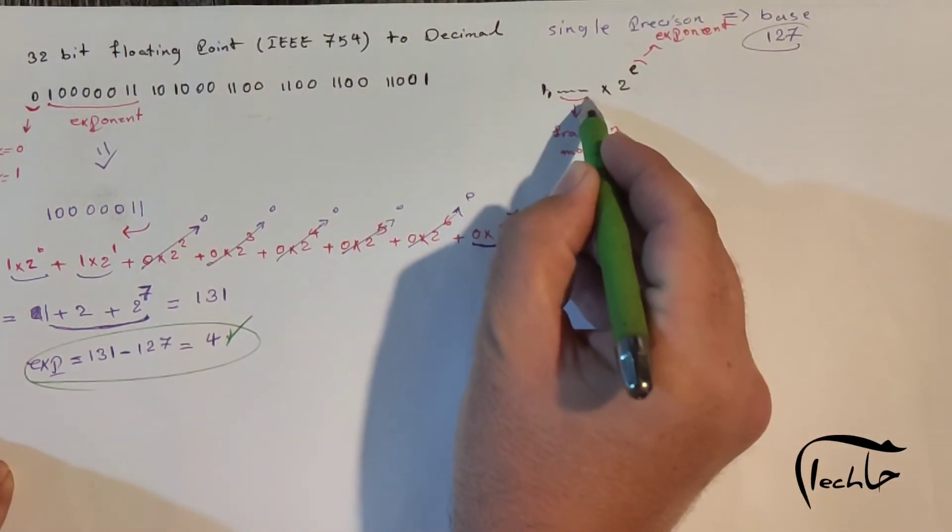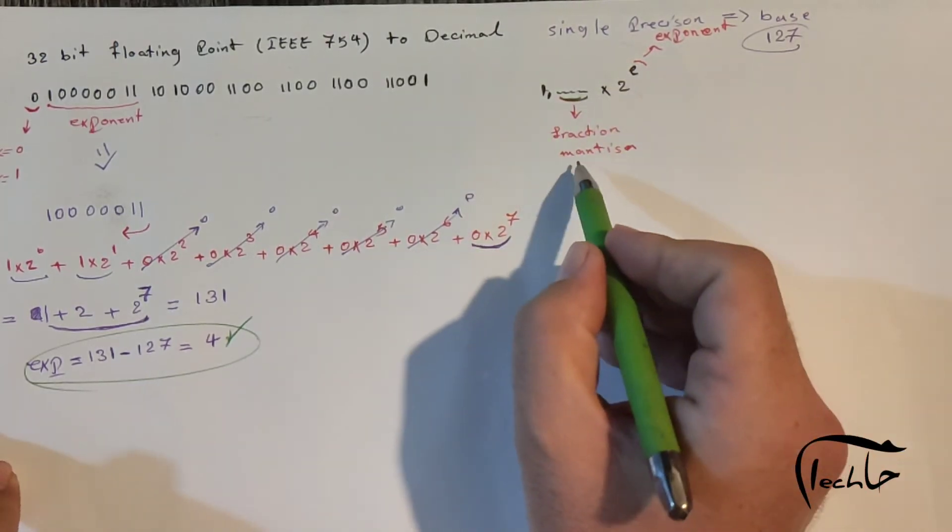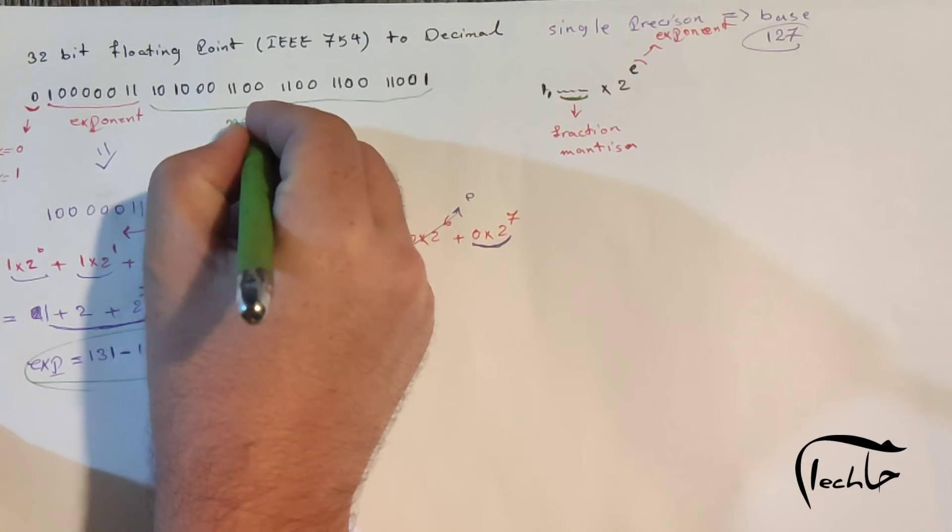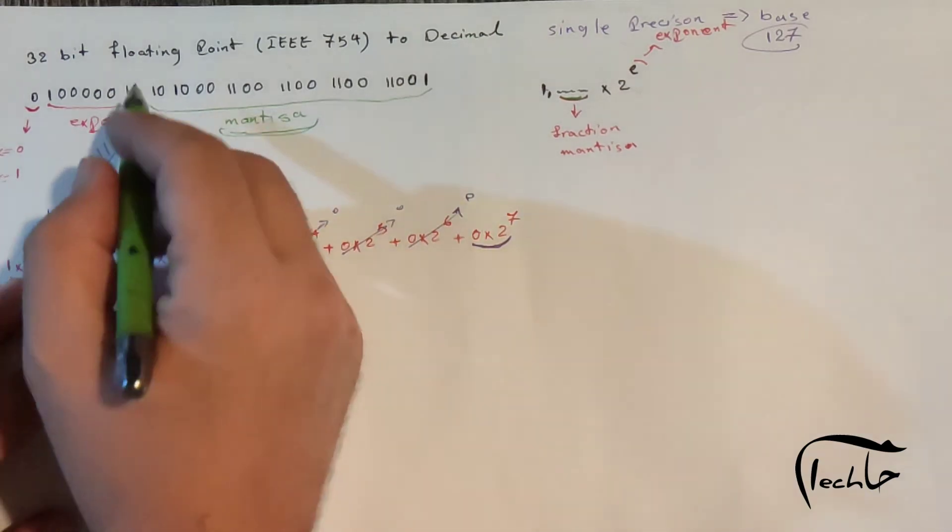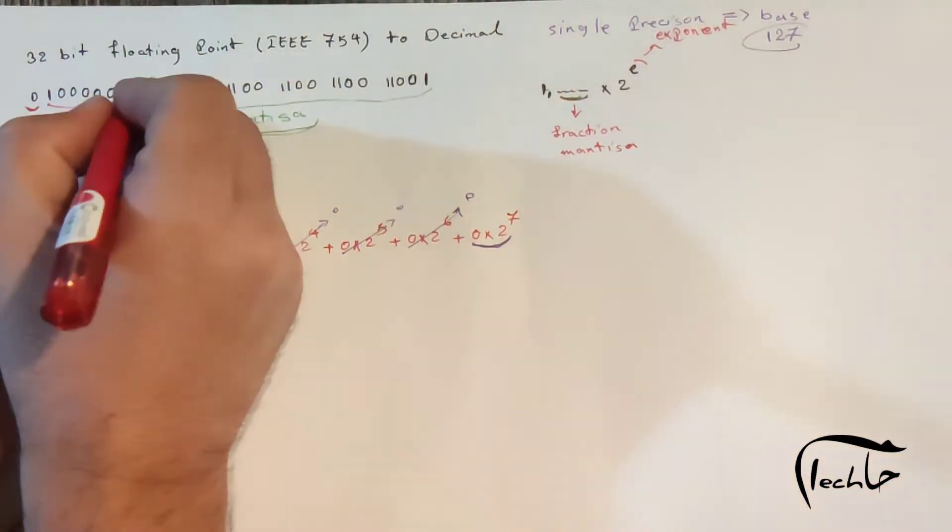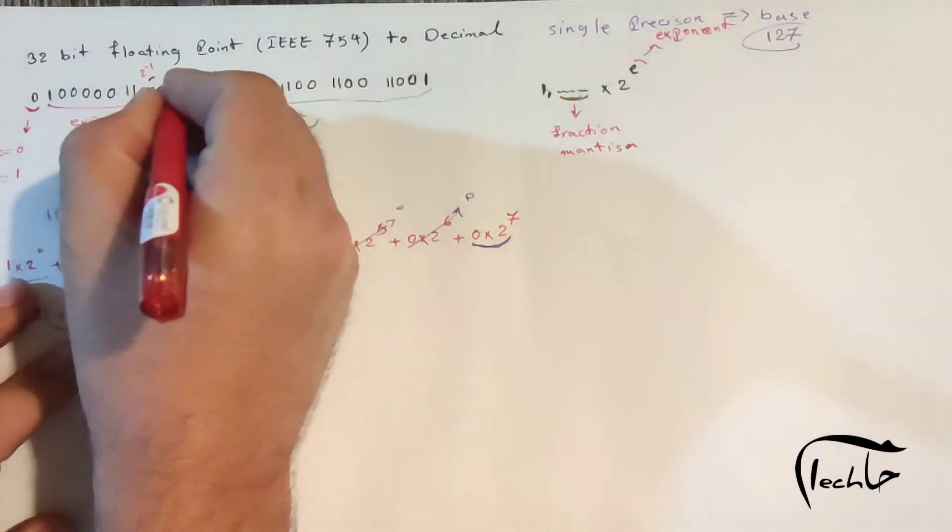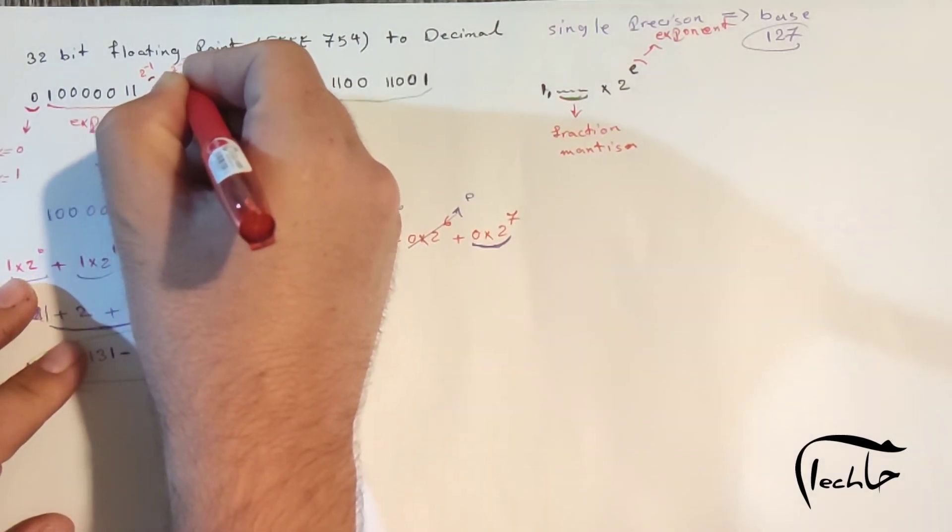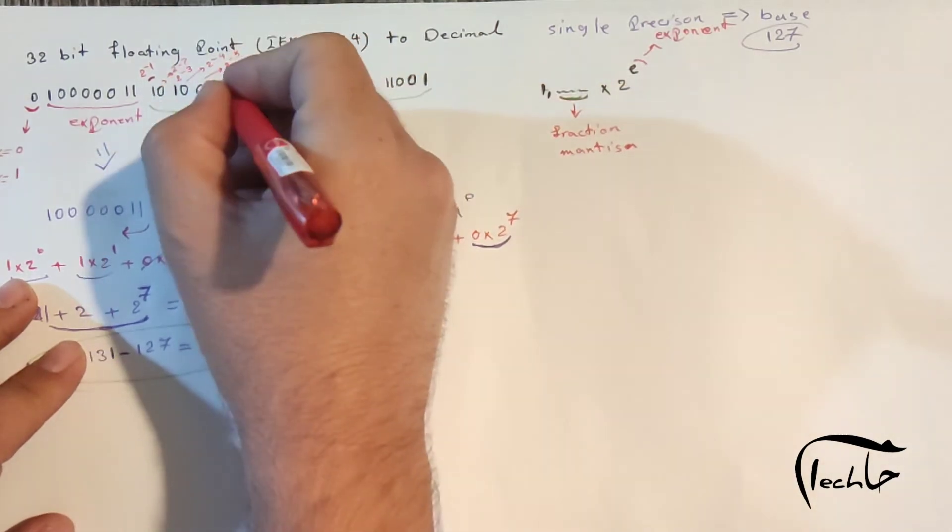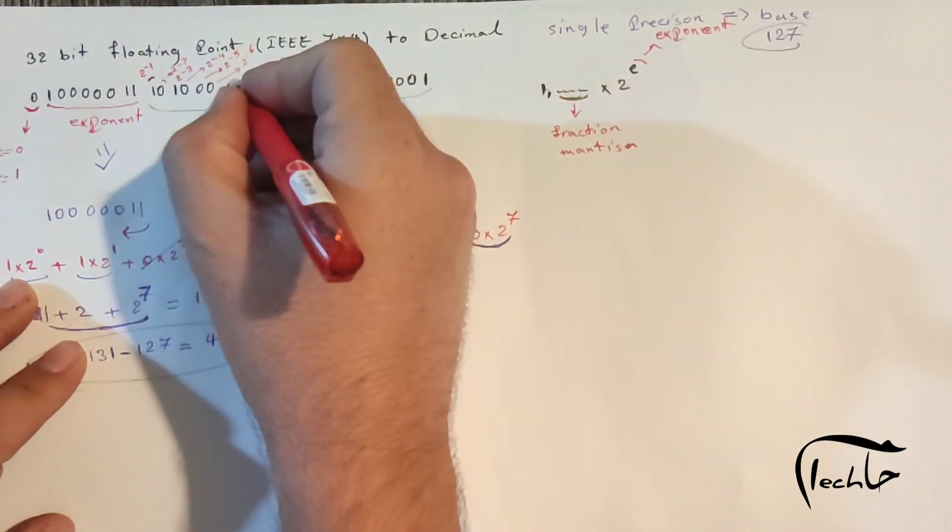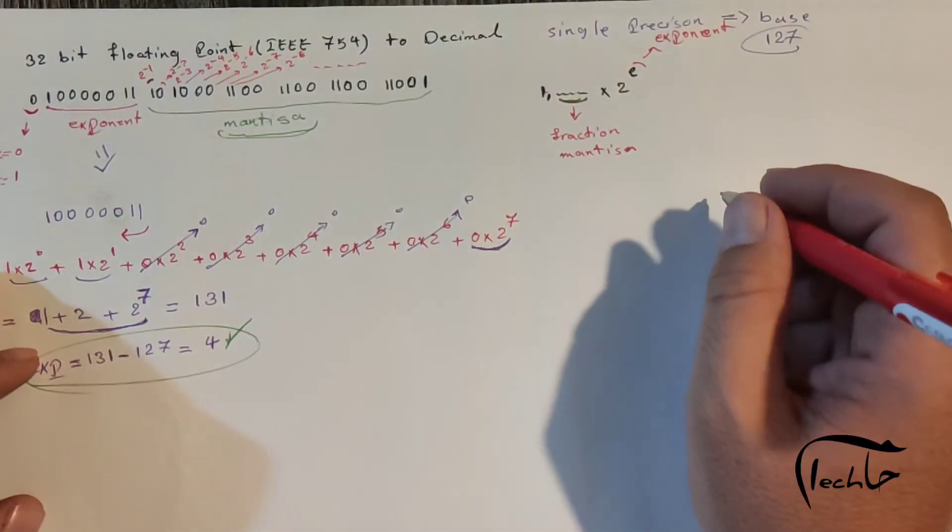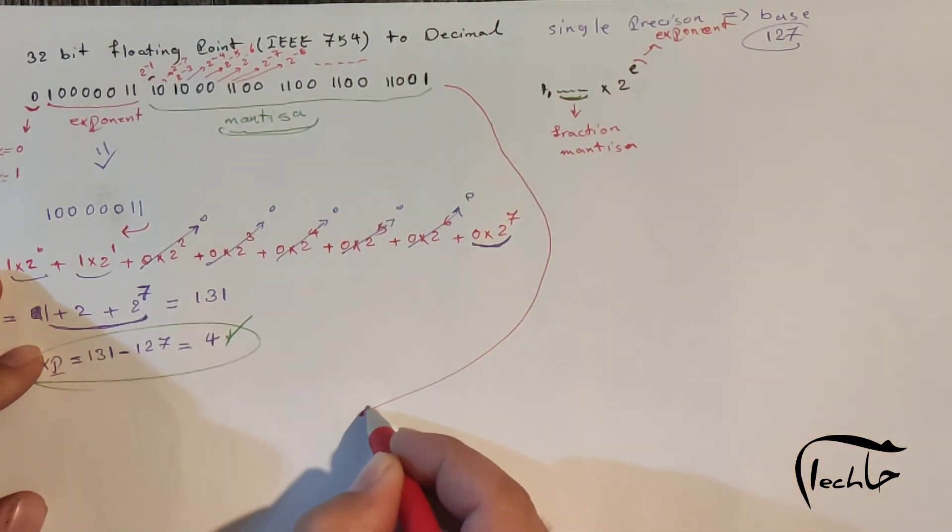Okay, I obtained the exponent value. It's 4. The fraction segment is called mantissa. Let's find out the mantissa value. I multiply each bit by 2 with negative powers.